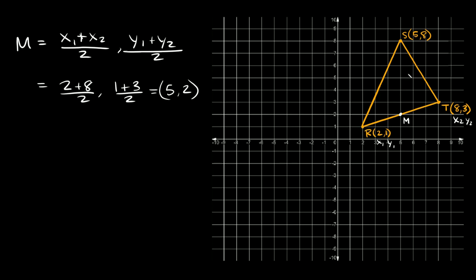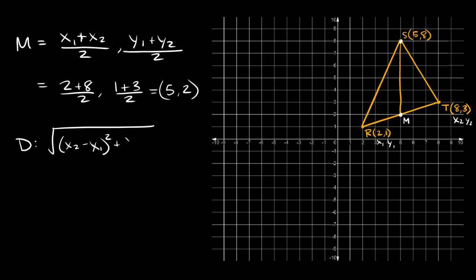The next thing we have to do is draw a straight line from the opposite vertex down to the midpoint. Then we move two-thirds of the way down this line to find the centroid. To find the exact point we need to use the distance formula, because first we need to find the distance from S to M. The distance formula is the square root of (x₂ − x₁)² + (y₂ − y₁)².